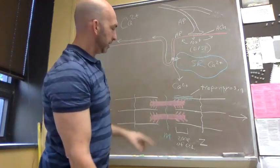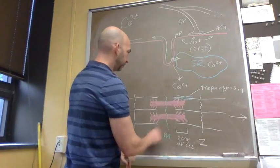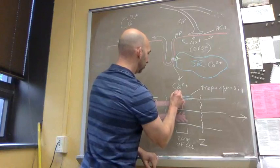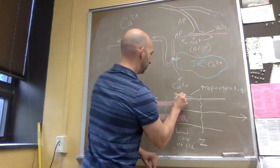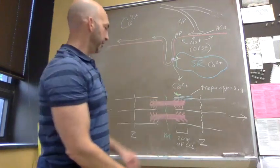When we get the action potential and we get the stimulus and we get the calcium release, the calcium is going to bind to a molecule called troponin. It sits on top of the tropomyosin.